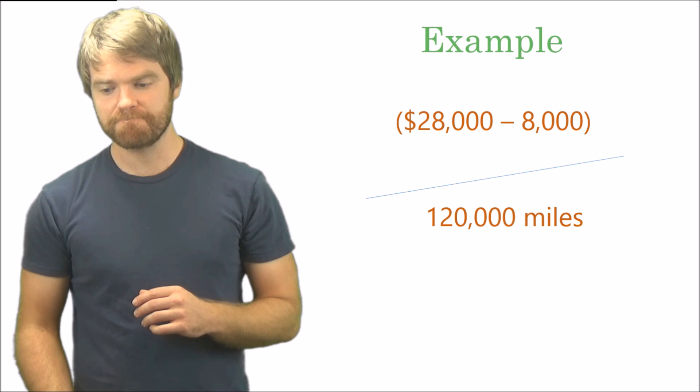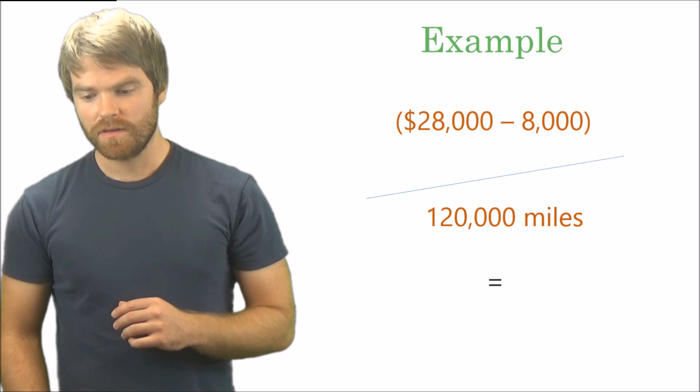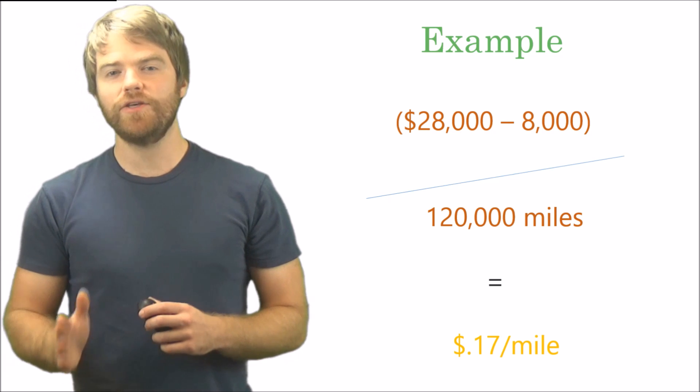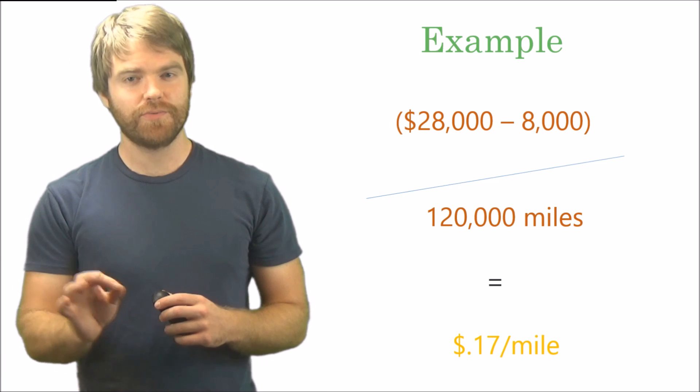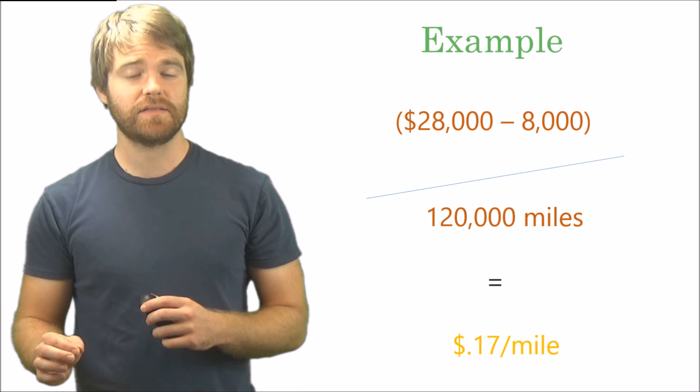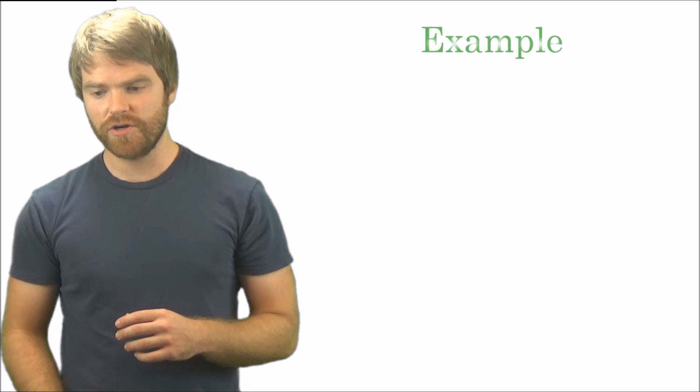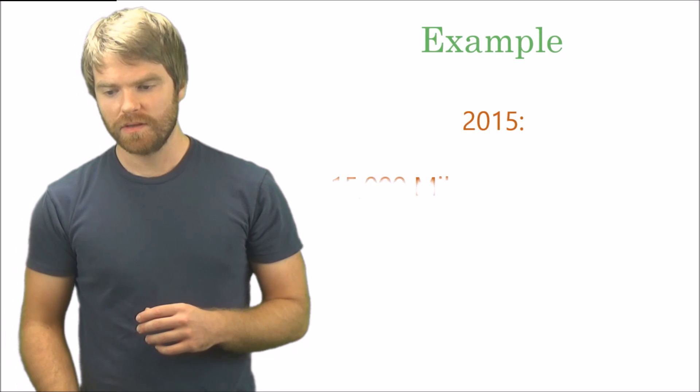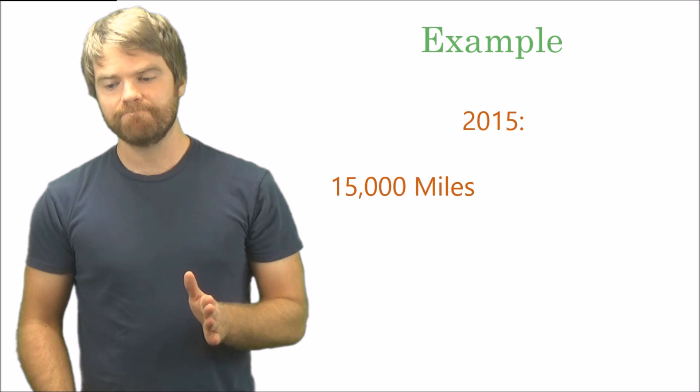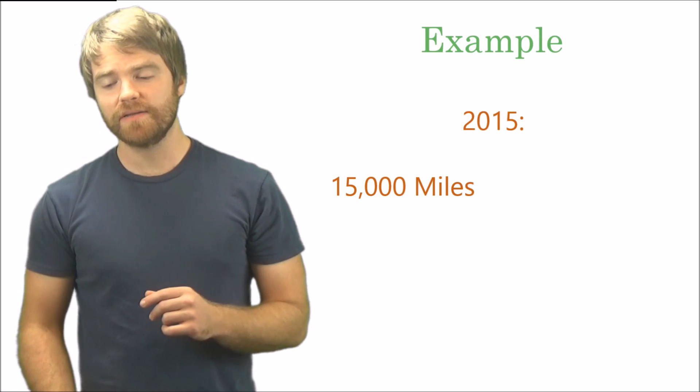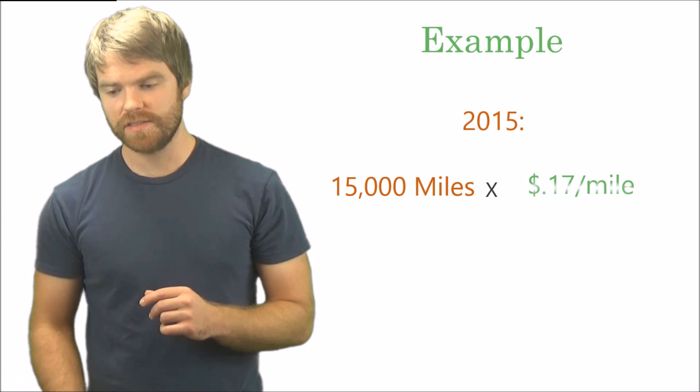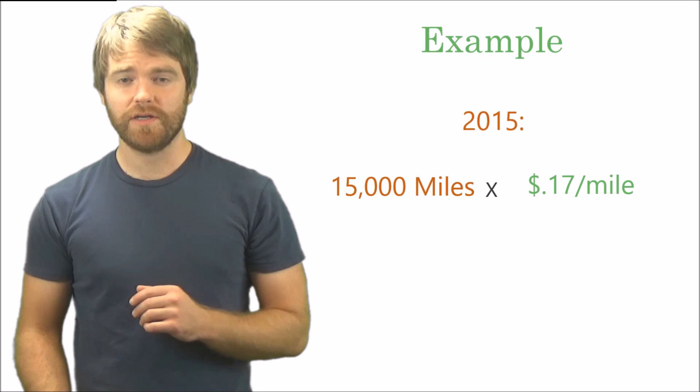You get about 17 cents a mile. So for every mile that you drive that car, you depreciate it by 17 cents. That's what that means. So for 2015, let's see what is our depreciation expense. Well, we drove it for 15,000 miles and we know it's about 17 cents per mile. So our depreciation expense for 2015 is $2,550.